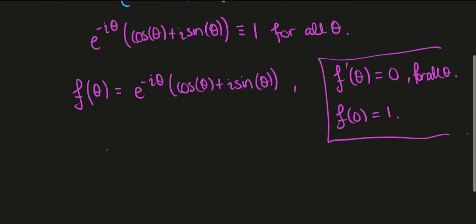Okay, so let's give this a go, we'll compute the derivative of f with respect to theta. So we'll need the product rule here. We differentiate the first term which brings down a minus i and then we'll have e to the minus i theta and then we leave this term alone.